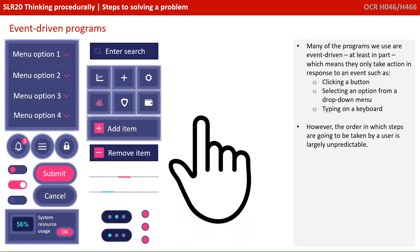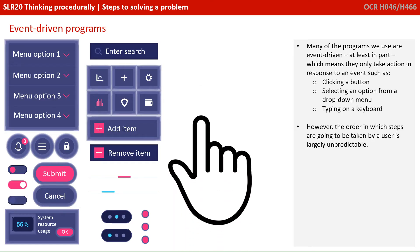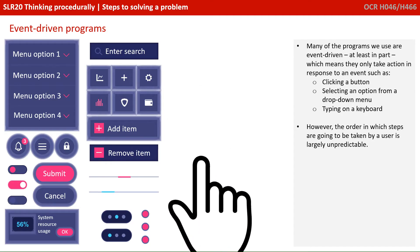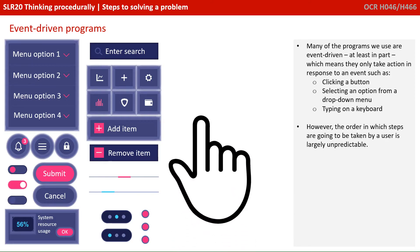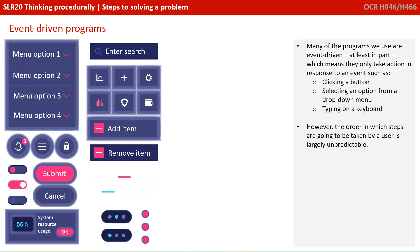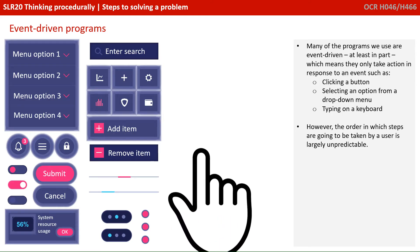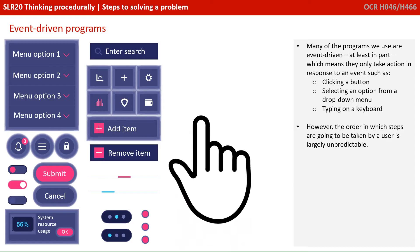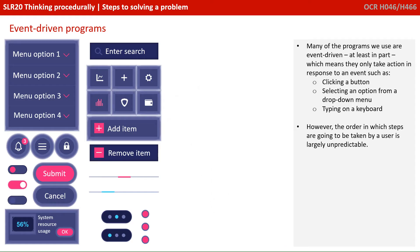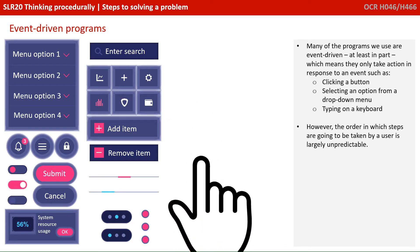Well, many of the programs we use are what's called event driven, at least in part. Which means they only take action in response to an event such as clicking a button, selecting an option from a drop-down menu or typing on a keyboard. However, the order in which the steps are going to be taken by the user is largely unpredictable.